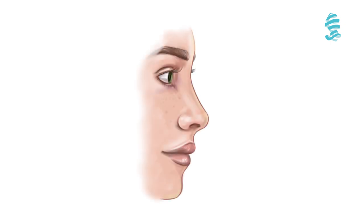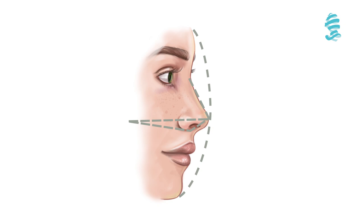Tip rotation is the location of the tip on an imaginary arch touching the forehead, tip, and chin. It can be normal, under-rotated, or over-rotated.